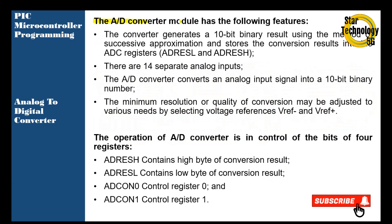The Analog to Digital Converter module has the following features. The converter generates a 10-bit binary result using the method of successive approximation and stores the conversion result into the ADC register. There are 14 separate analog inputs. The ADC converts an analog input signal into a 10-bit binary number. The minimum resolution of the converter may be adjusted to various needs by selecting voltage reference — V-reference negative and V-reference positive.